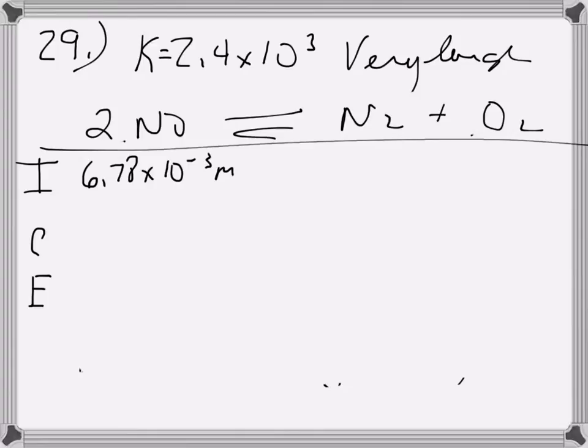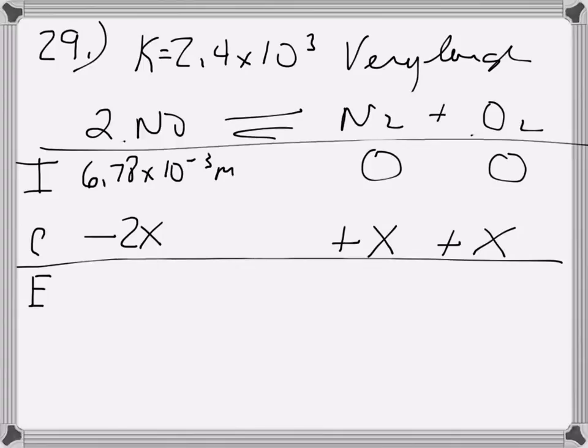We're going to assume that there are 0 products at this point. So we're going to plug in x for that and x for that. Now for every one nitrogen, one oxygen is going to be made, so the answer is going to be the same for both. We're going to assume we have 0. As the reaction occurs, we're going to make x of that. At the same time, for every one nitrogen that is made, we're going to destroy two nitrogen monoxides. So the equilibrium concentration of these is going to be x and x and 6.78 times 10 to the negative third minus 2x.